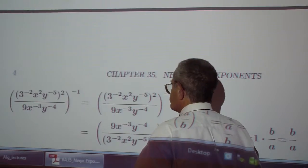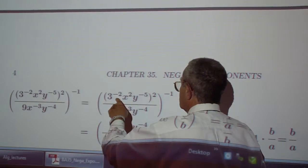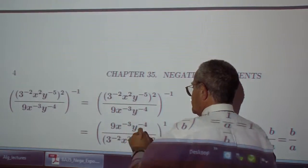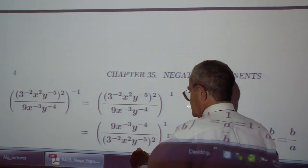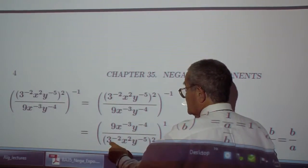So this becomes 3 to the positive 2, x to the negative 2, 3 to the positive 2. That's 3 to the negative 2 here, x to the negative 2.